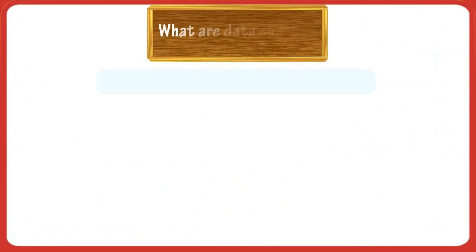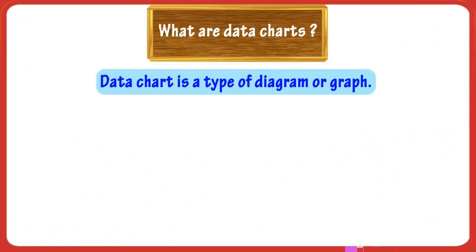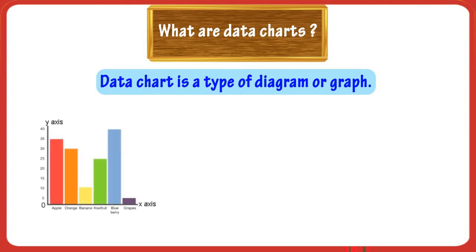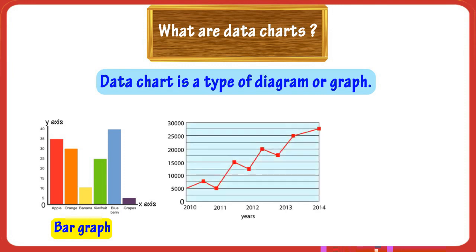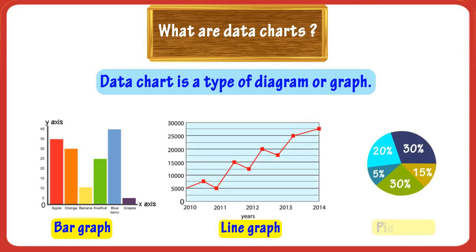A data chart is a type of diagram or graph where data is represented by various symbols, such as bars in a bar graph, lines in a line graph, or slices in a pie chart. We make data charts so that large quantities of data are easily read and the relationships between different parts of data can be easily understood.